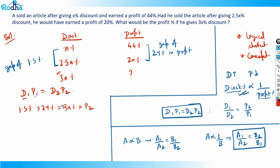So we have 1.5x times 24 equals 3x times p2. We can cancel x from both sides. So p2 equals 24 times 1.5 divided by 3, which equals 36 divided by 3. Therefore p2 equals 12. The answer is 12 percent.